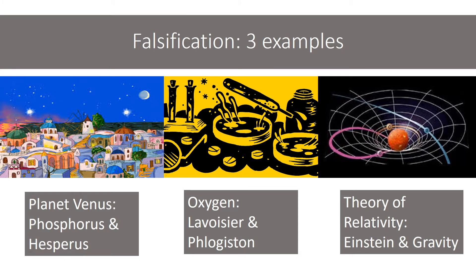I've included here three real-life examples you could use to illustrate how falsification works in the natural sciences: from the world of the ancient Greeks, the planet Venus — which they originally thought was two planets, one in the morning and one in the afternoon; the peer review discovery of oxygen and the falsification of the theory of phlogiston; and then Einstein's theory of relativity.